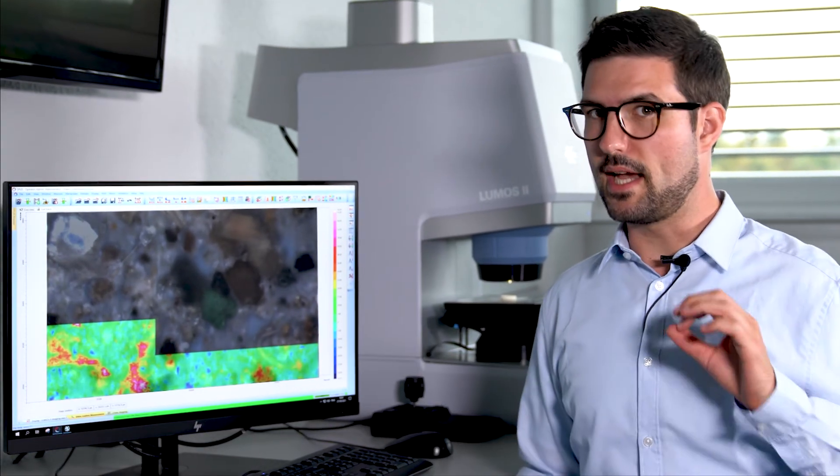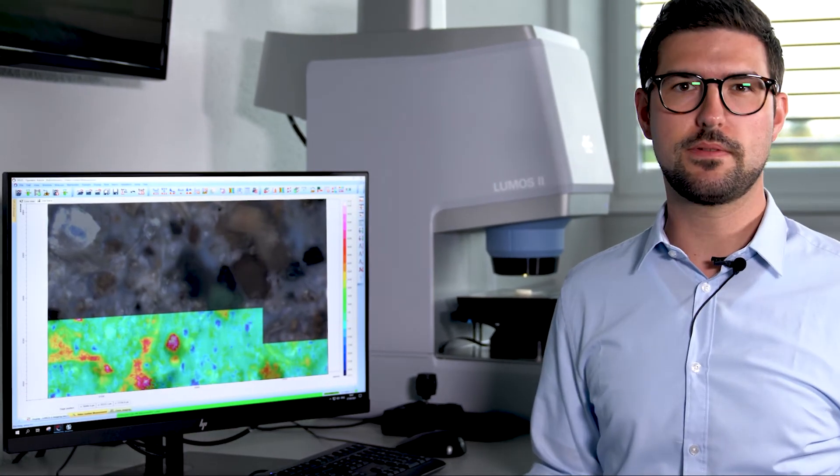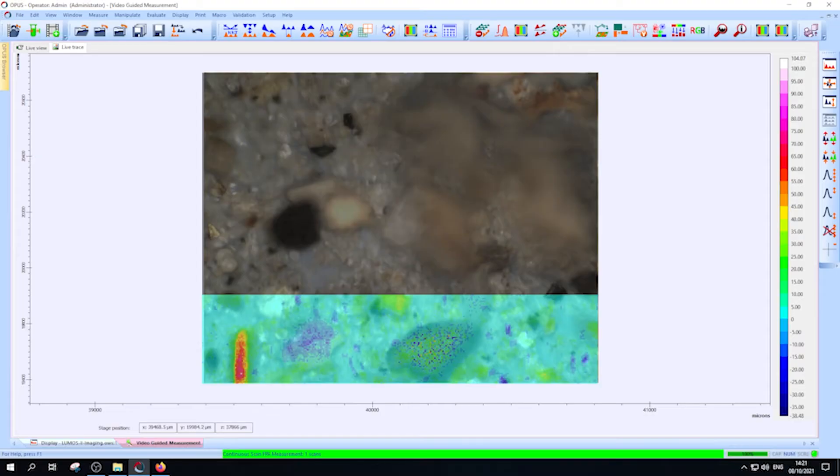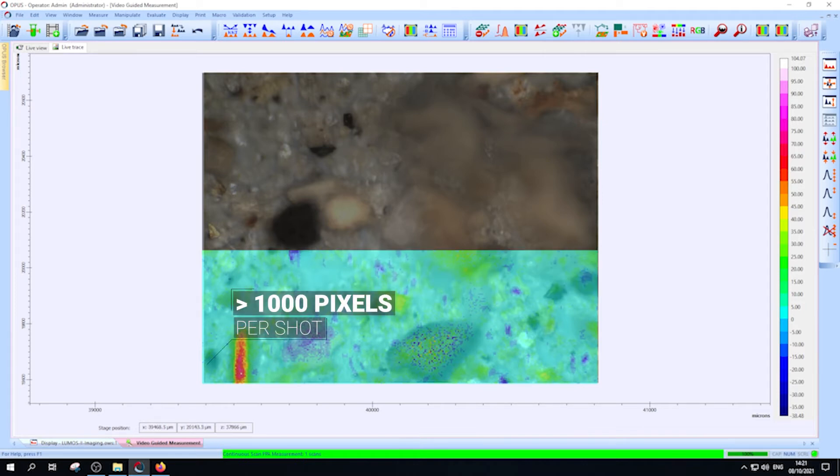What you see here is the unsurpassed imaging speed achieved by a focal plane array detector. It works like a digital camera, where each square simultaneously acquires over 1000 pixels at a spatial resolution of 5 micrometer.